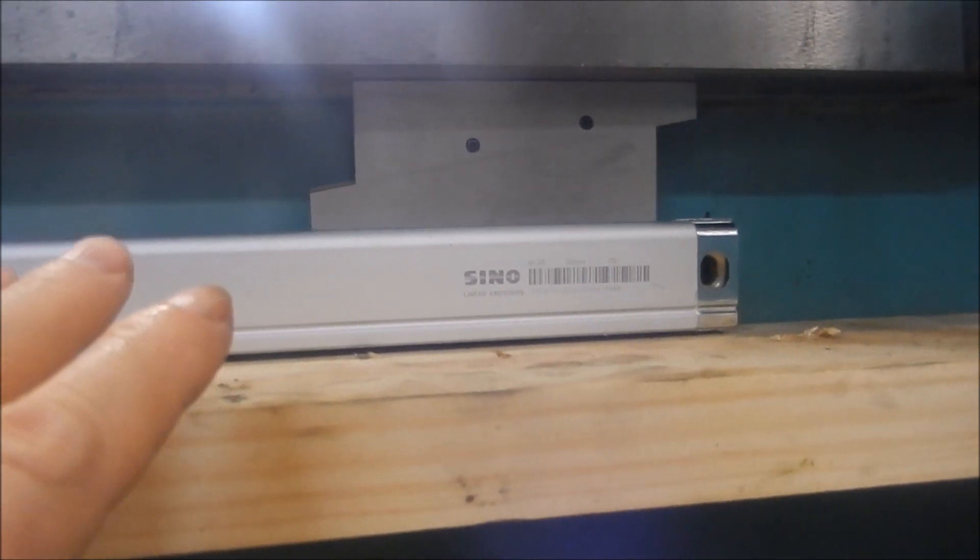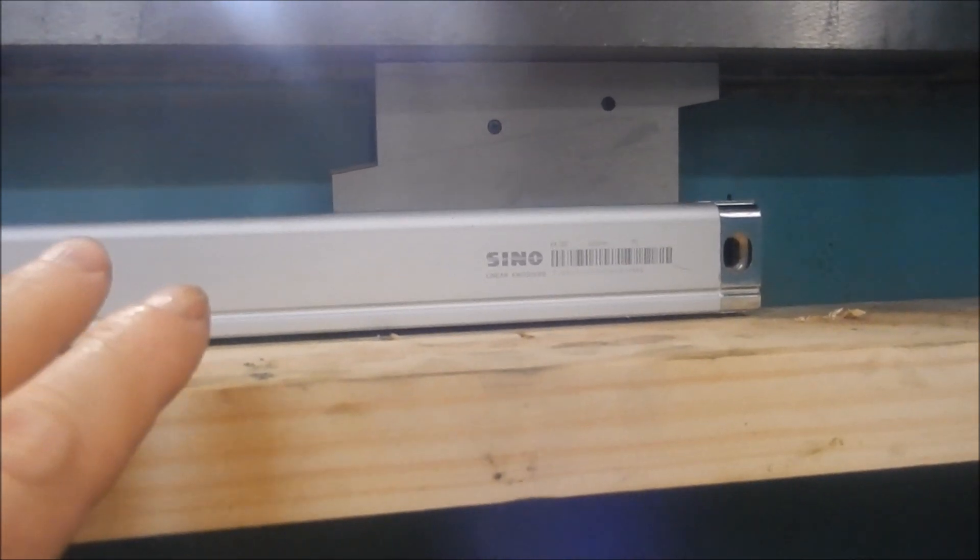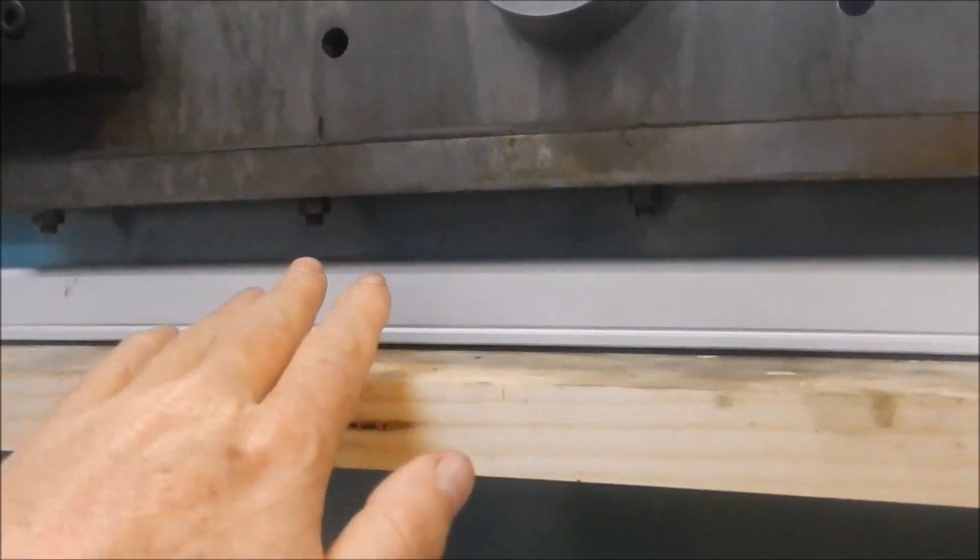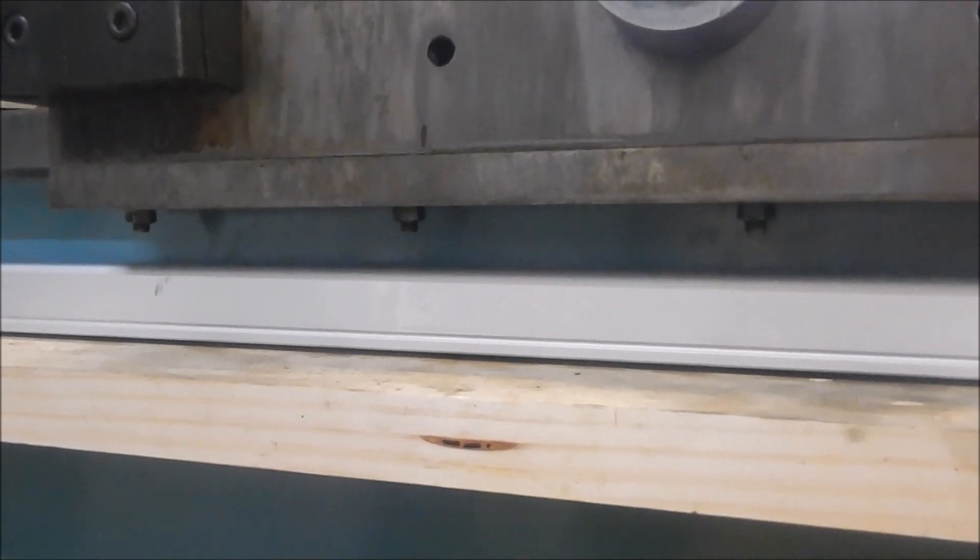So the plan is that we get this scale in position. Once we've got the scale in position and we know where we are, we can then start making the bracketing up that's going to support that reed head or position that reed head off the saddle itself.